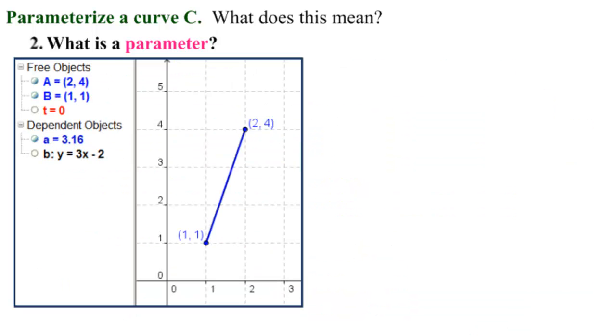Let's see what all of this means. So here is a curve. In this case, it's a line segment between the points one, one, and two, four. And we see the X-axis. We see the Y-axis.